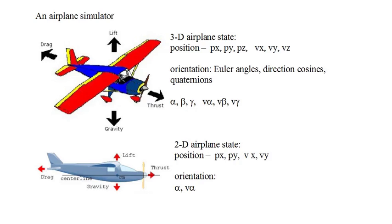Now we will tackle an airplane simulator. In three dimensions, the state of an airplane in flight is specified by three position coordinates, x, y, and z, and their rates of change, x prime, y prime, and z prime. You also need to keep track of orientation, and there are three ways to keep track of an airplane's orientation: using Euler angles, direction cosines, or quaternions.